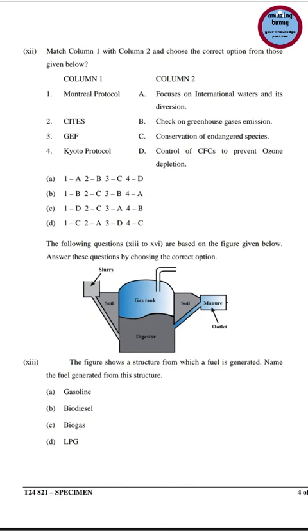The next question asks to match column 1 with column 2. Column 1 contains: Montreal Protocol, CITES, GEF, and Kyoto Protocol. Montreal Protocol is correctly matched with control of CFCs to prevent ozone depletion. CITES is matched with conservation of endangered species. GEF is matched with focus on international waters and its diversion. Kyoto Protocol is matched with checks on greenhouse gas emissions. Option C is correct.